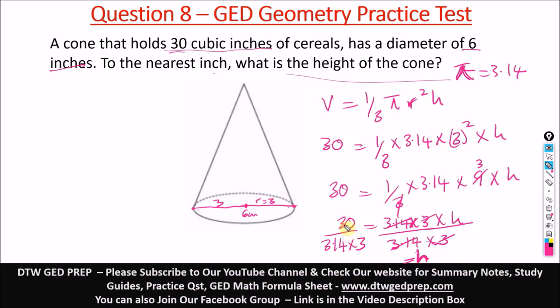When I do this on my calculator, 30 divided by this, what I will get is 3.18. So h is equal to 3.18. And it doesn't stop there. It says to the nearest inch. So to the nearest inch, you can see here after the 3, after the decimal point, we just have 1. 1 is not up to 5, so we can approximate here. So h is just equal to 3 inches.